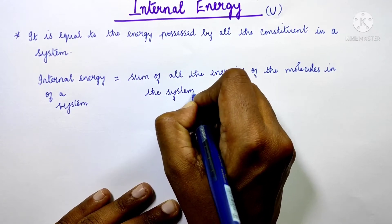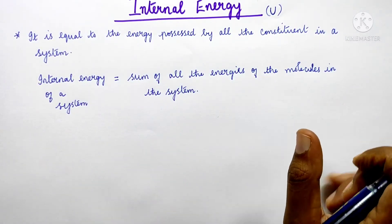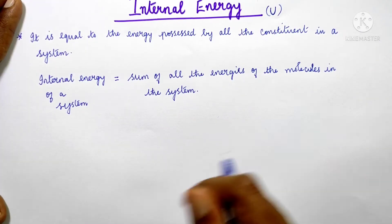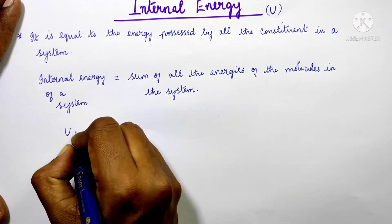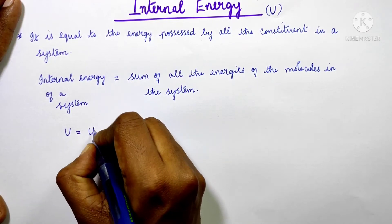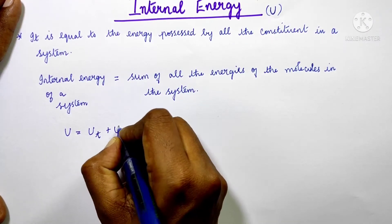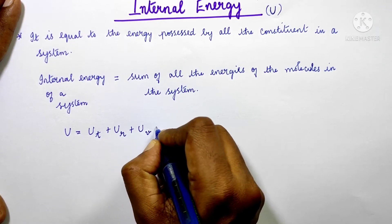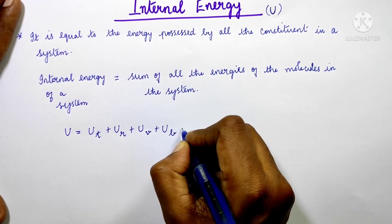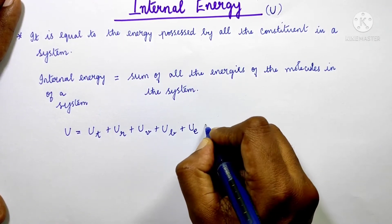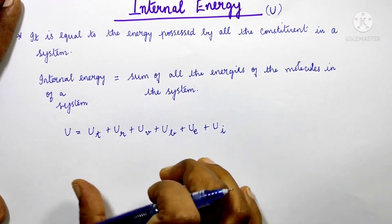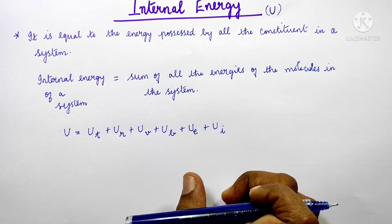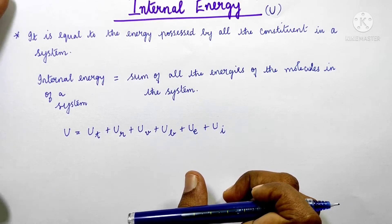So internal energy is equal to the sum of all the energies of the molecules in the system. All the different kinds of energies present in the molecules must be added together.